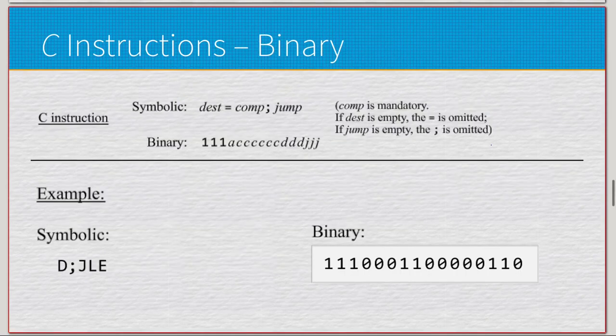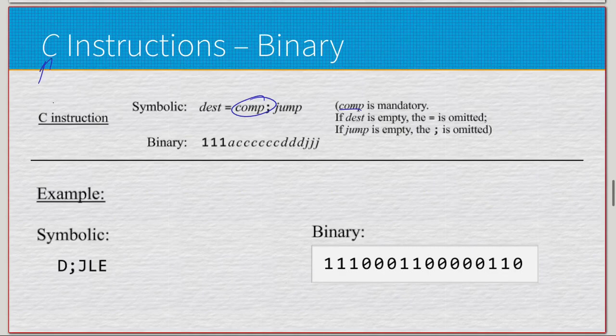Moving on, let's take a look at the actual binary of what's happening. Let's take a look at symbolic computation mandatory. There is a computation in every single C instruction, hence why it's a C instruction and why C is computation. So destination can be null, jump can be null. If destination is null, the equal sign is omitted and for jump, semicolon is omitted. But for binary, it's just the same 16 bits. It's going to be what gets set to zero and one, obviously.